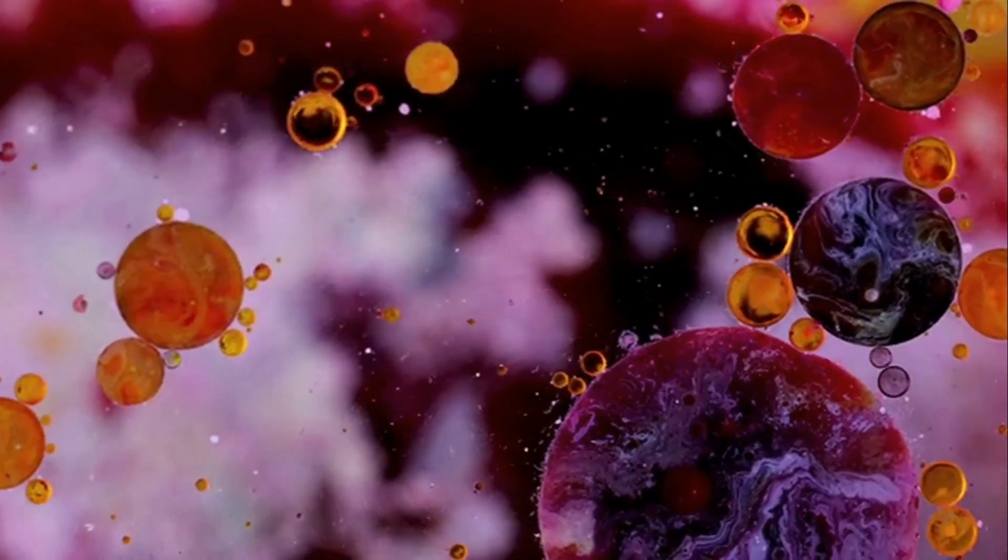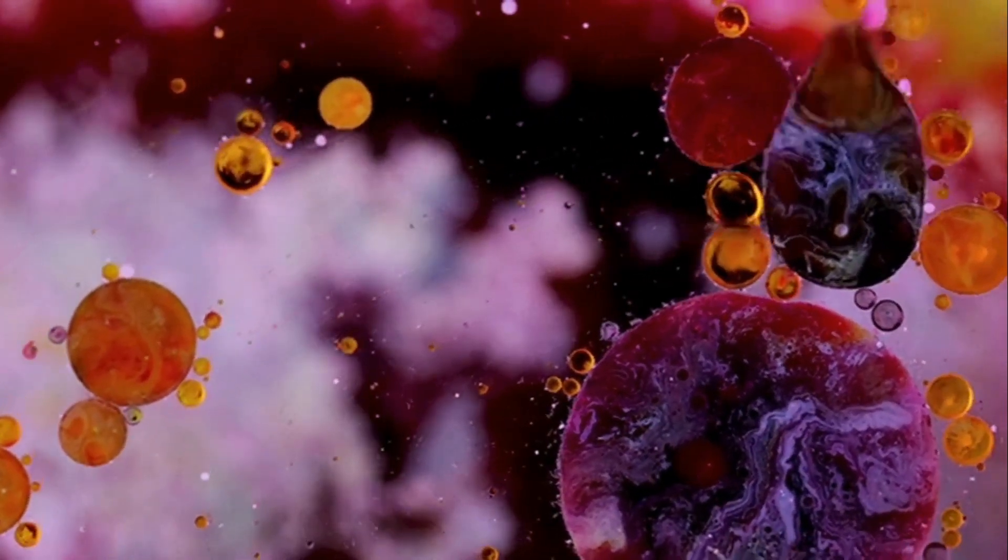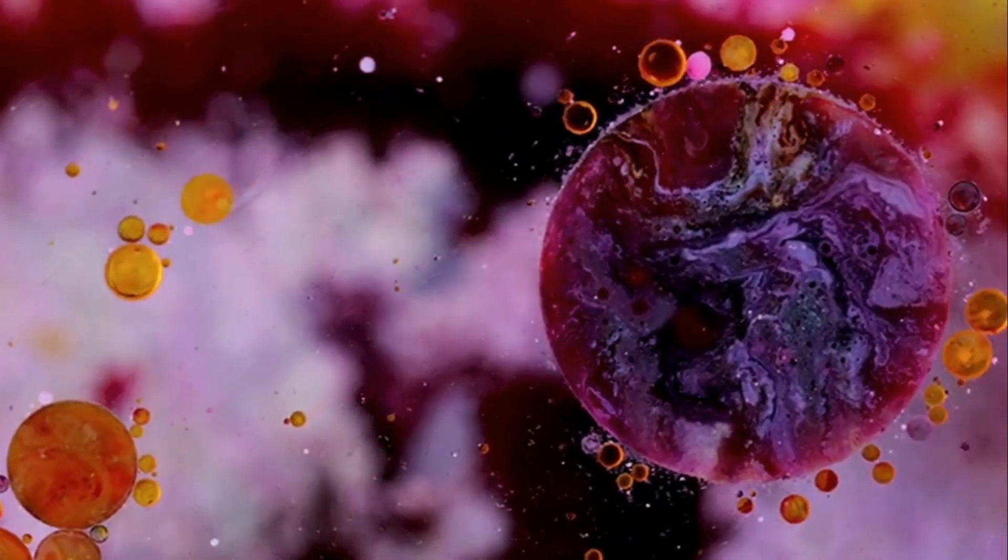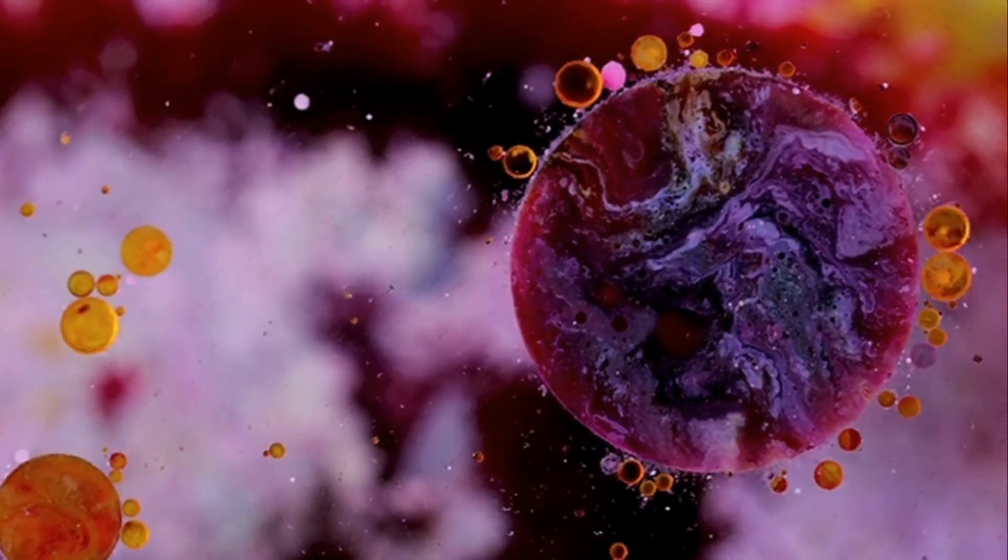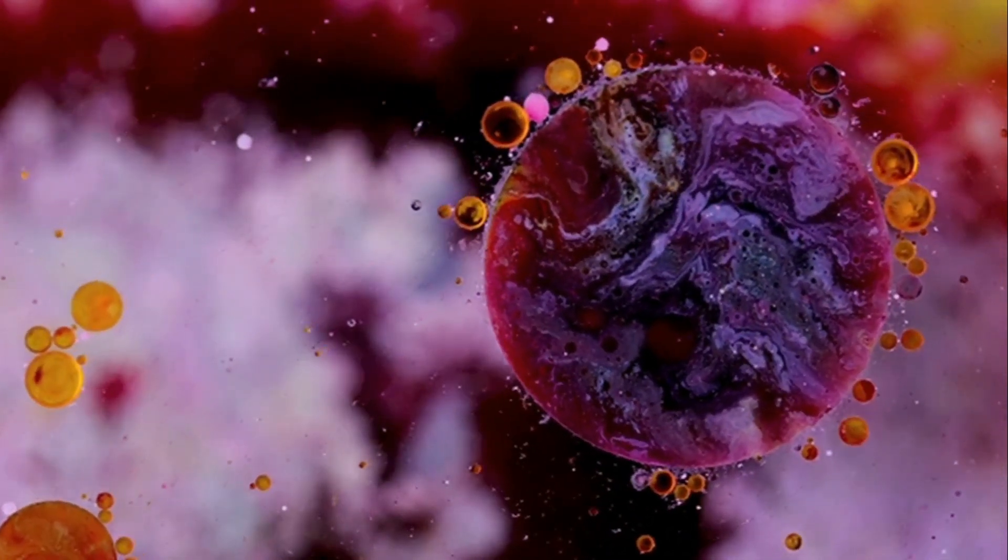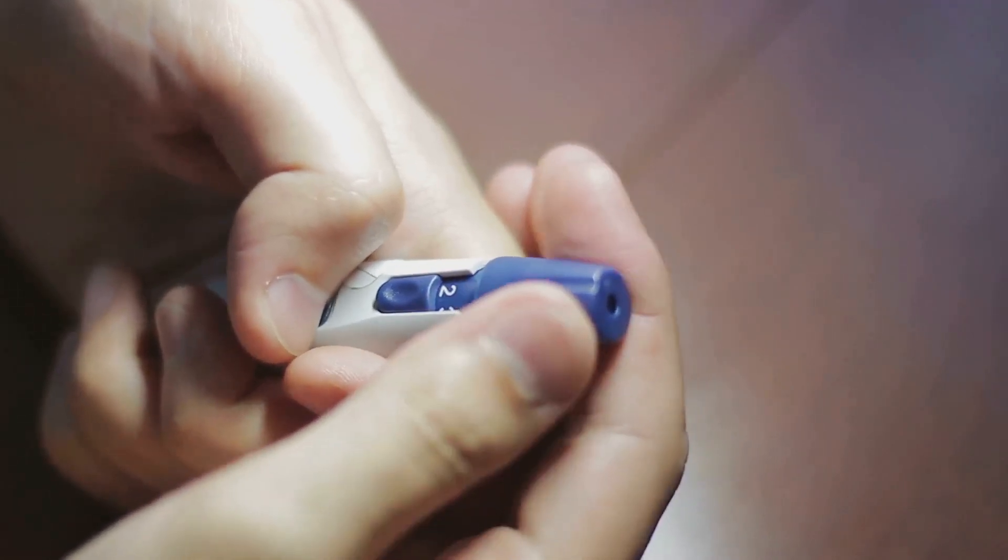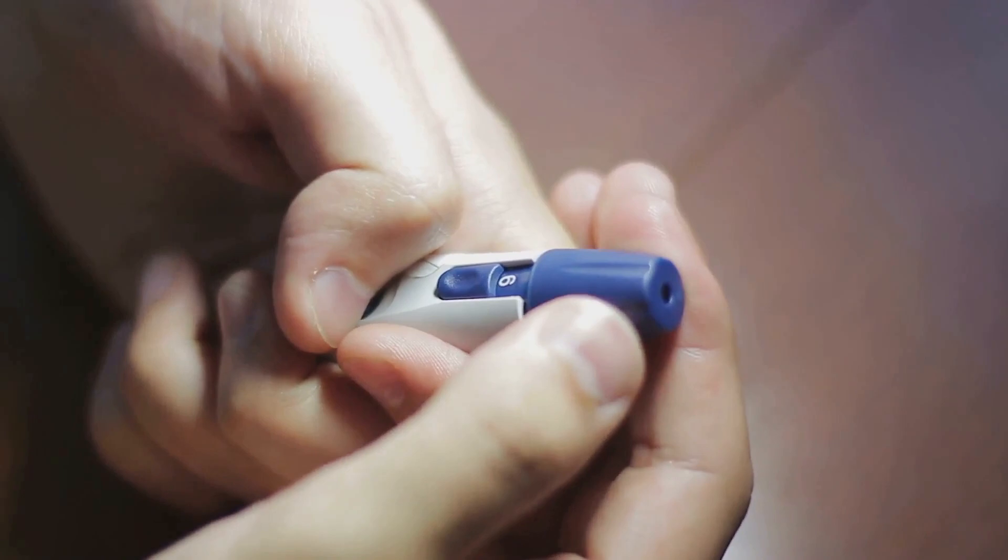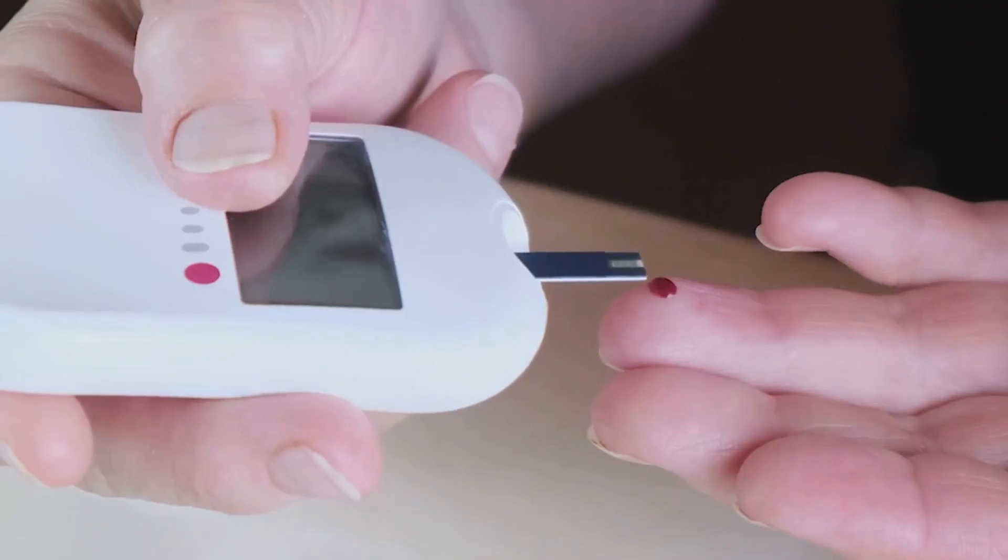On the other side of this metabolic coin, we have pancreatic beta cells. These are the cells in our pancreas that produce and release insulin. They're like the key makers in our body, working diligently to ensure we have enough insulin keys to unlock our cells and let glucose in.